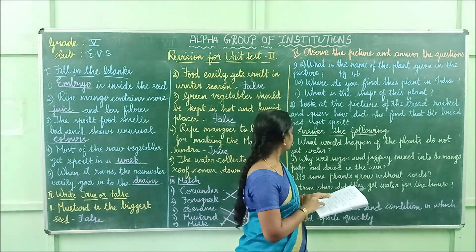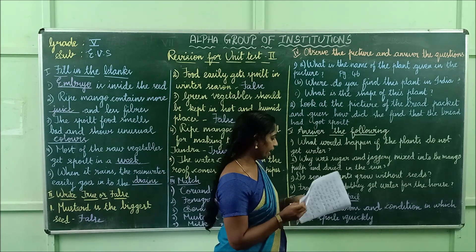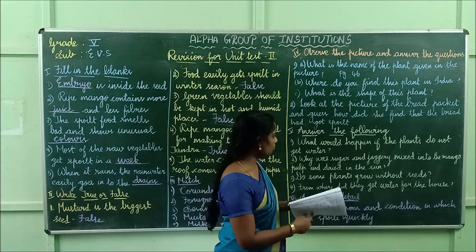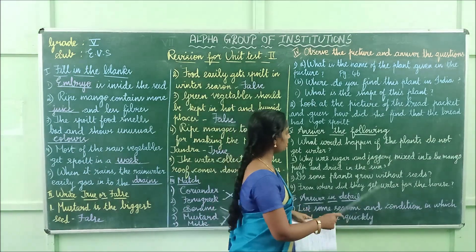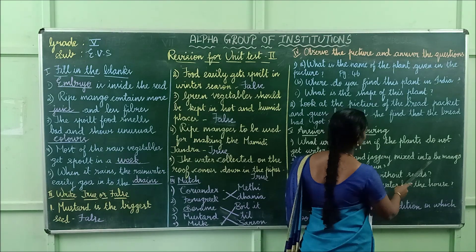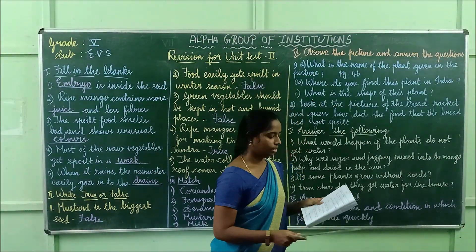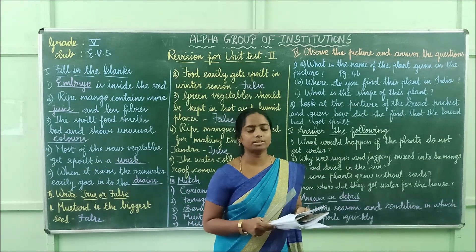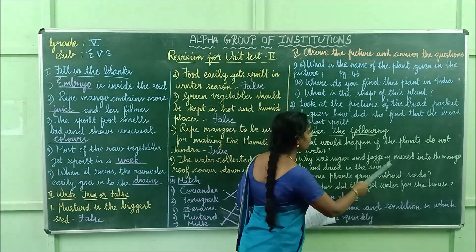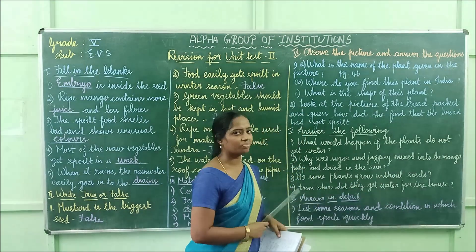Second one: why was sugar and cherry mixed into the mango pulp and dried in the sun? To make mamadi tundra, sugar and jaggery was mixed into the mango pulp and dried in the sun.